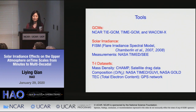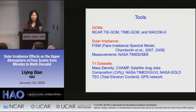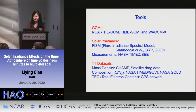The tools I will use are GCMs, which includes the NCAR TIE-GCM, TIME-GCM, and WACCM-X. The solar irradiance input for these GCMs is from the Flare Irradiance Spectral Model (FISM), an empirical solar flux model based on observation. I also use solar flux measurements from NASA TIMED/SEE. Thermosphere-ionosphere datasets include thermosphere mass density from the CHAMP satellite and satellite drag data, thermosphere composition O/N2 from NASA TIMED/GUVI and NASA GOLD, and total electron content data from the global GPS network.